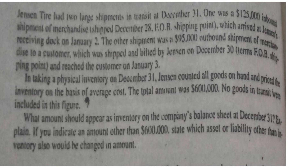The other shipment was a $195,000 outbound shipment of merchandise to a customer, shipped and billed by Jensen on December 30th under FOB shipping point terms, reaching the customer on January 3rd. In taking a physical inventory on December 31st, Jensen counted all goods on hand and priced inventory on the basis of average cost, totaling $600,000. No goods in transit were included in this figure.